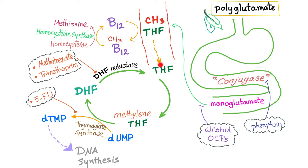For tetrahydrofolate to participate in DNA synthesis, it has to get rid of the methyl group. It shifts the methyl group and gives it to B12. Now the cobalamin becomes methylcobalamin. The tetrahydrofolate is free and can participate in DNA synthesis. The methylcobalamin, in order to participate in DNA synthesis, has to give that methyl group to homocysteine. Homocysteine plus methyl equals methionine, thanks to the enzyme homocysteine synthase.